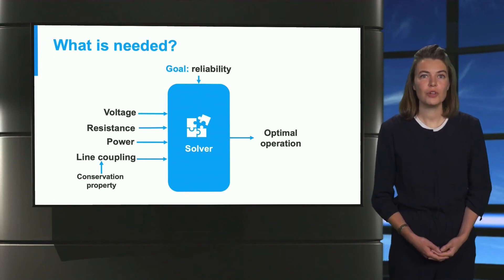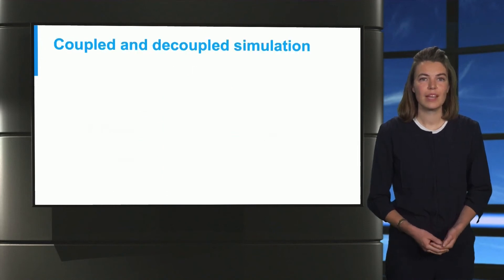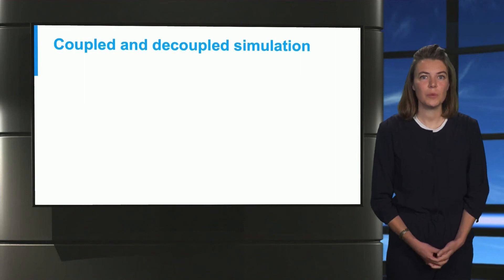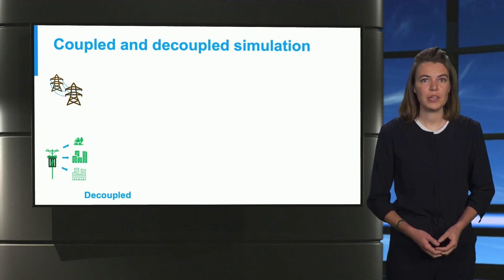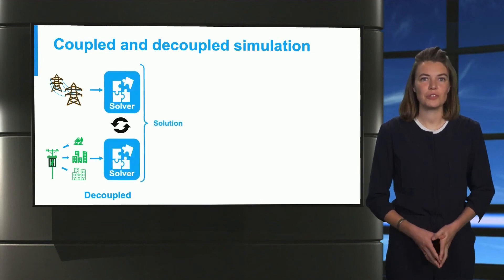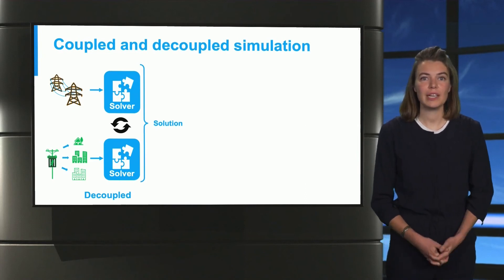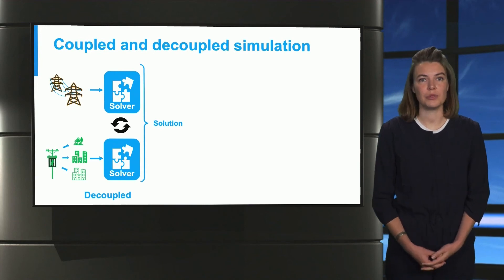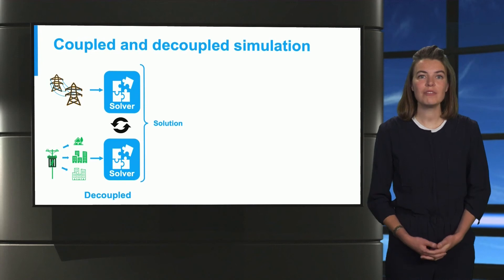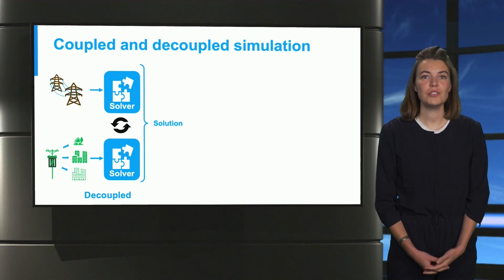We already have such a solver for the individual networks, but how can we simulate both networks together? There are two approaches we can use, and let's start with the decoupled one. The electrical transmission and distribution networks go separately into their own solvers, and then iterate to know what happens. For example, the information from a transmission network is sent to the distribution solver. Then the distribution part is solved, and the obtained solution is sent back to the transmission solver. This is done a couple of times until we get a certain convergence, or in other terms, until the solution is satisfactory.